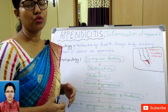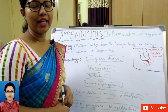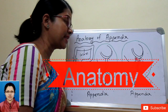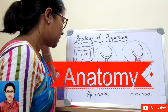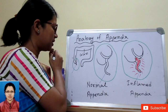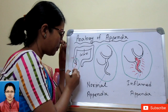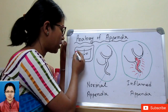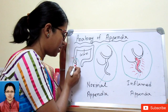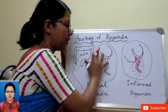Before going into appendicitis, it is very important to know the related anatomy and physiology. From the anatomy of the appendix, we can see the large intestine colon, and in the inferior part of the cecum, there is a narrow blind tube named the appendix.